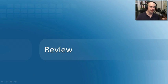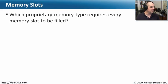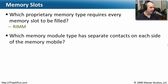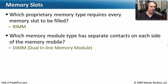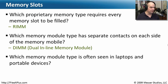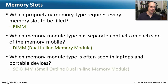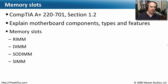Let's review what we've learned about memory interfaces. Which proprietary memory type requires every memory slot to be filled? That would be the RIMM from Rambus. Which memory module type has separate contacts on each side? That would be the Dual Inline Memory Module — the DIMM. Which memory module type is often seen in laptops and portable devices? We almost always see a SO-DIMM — a Small Outline Dual Inline Memory Module. That covers memory slots from 220-701 Section 1.2: RIMM, DIMM, SO-DIMM, and SIMM.